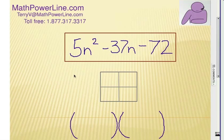Alright, now you try. Pause the video and use a factor box. See if you can factor 5n² - 37n - 72. Good luck.